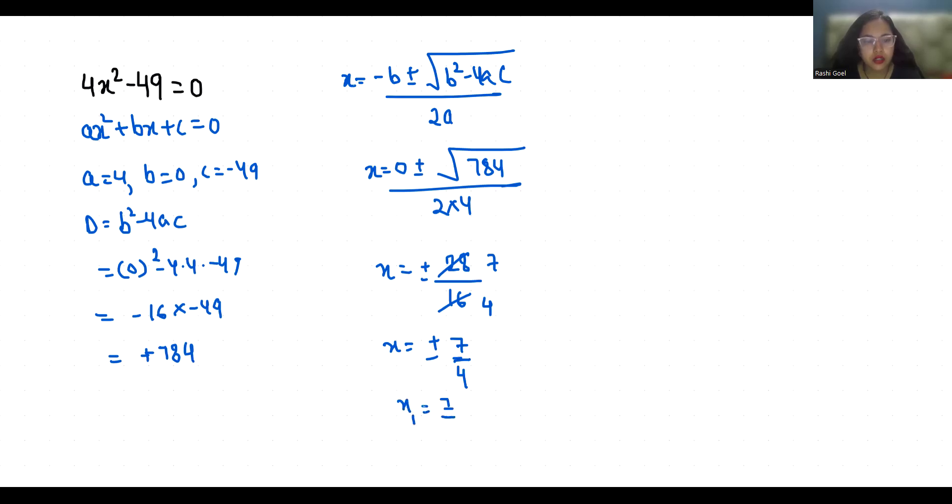Sorry, it is 8 here. 4 times 2 is 8. So we will reduce it, so this gives us 2. So 7 by 2. So our x1 is 7 by 2 and x2 is minus 7 by 2.